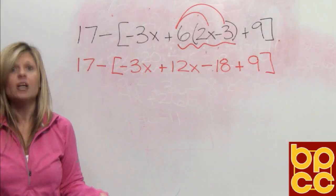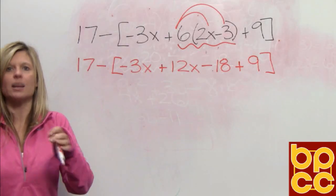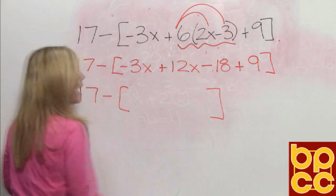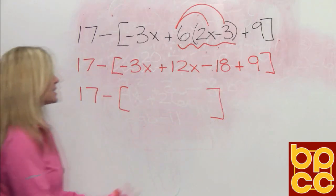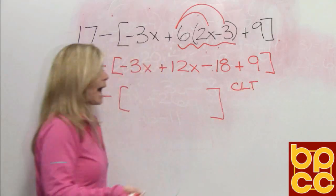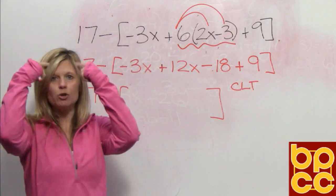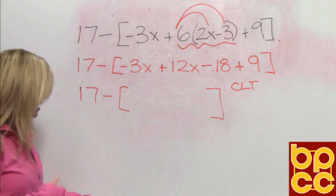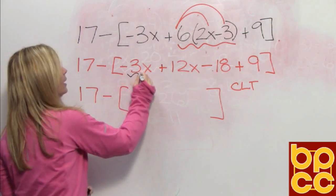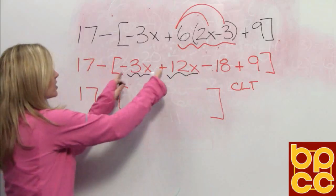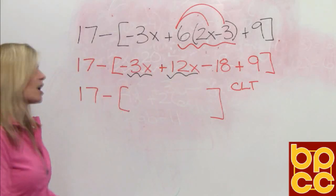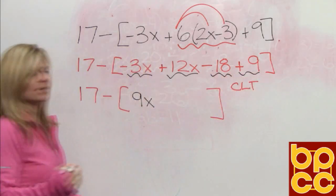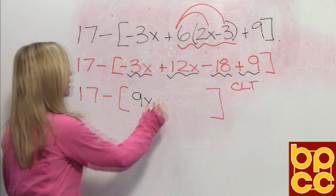Now inside the bracket we have four monomials — are any of them alike? Yes. So we collect like terms inside the bracket, leaving the 17, the minus, and the bracket. Negative 3x plus 12x: signs are different, so we subtract and give the sign to the larger — that gives us 9x. Then negative 18 and positive 9: signs are different, we subtract and give the sign to the larger — negative 9.